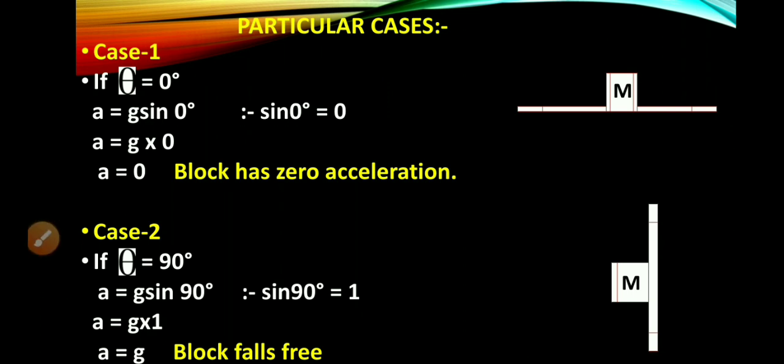Now the particular cases of inclined plane. Case 1: If the plane and block are both in the same direction, the angle is zero degrees. a equals g sin 0°. Sin 0° equals 0, so a equals 0. That means the block has zero acceleration. Case 2: If theta equals 90 degrees, the block and plane are perpendicular to each other. a equals g sin 90°. Sin 90° equals 1, so a equals g. That means acceleration equals gravity, so the block falls freely.